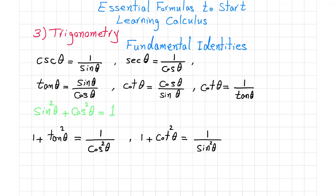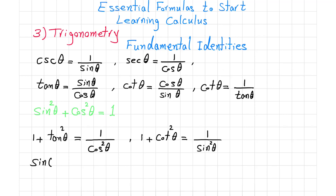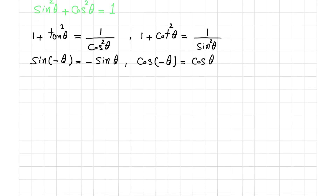Also we have sine of minus theta equals minus sine of theta. And similarly, cosine of minus theta equals cosine of theta. The reason can be seen on the trigonometric circle — let me draw that and explain.